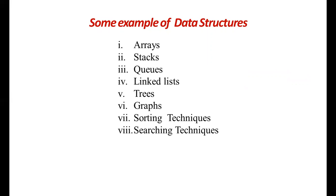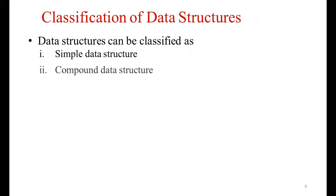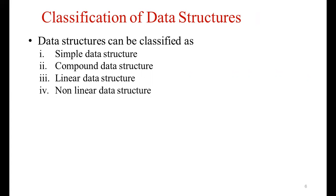Coming to the classification of data structures, they can be classified as simple data structures, compound data structures, linear data structures, and non-linear data structures. The third and fourth — that is, linear data structures and non-linear data structures — are the two main types of data structures.